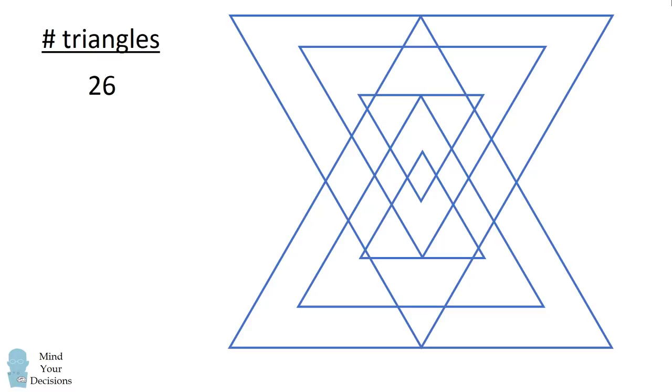Now, just for fun, let me put them all in one diagram. Wow. 26 triangles in this diagram. Did you find all of them?